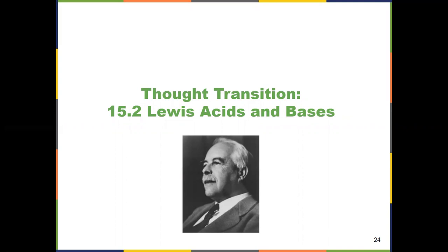Our original definition of acids and bases was the Arrhenius definition, which we learned in Gen Chem 1. Then in chapter 14, we got the Bronsted-Lowry definition of acids and bases. And then the Lewis acids and base definition takes us a little bit further. It's named after this guy, G.N. Lewis.